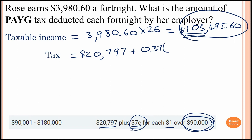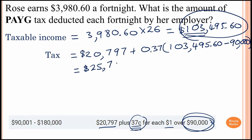So we calculate 0.37 times the difference: $103,495.60 minus $90,000, which equals $25,790.37. Adding the base tax of $20,797 gives the total income tax before Medicare levy.